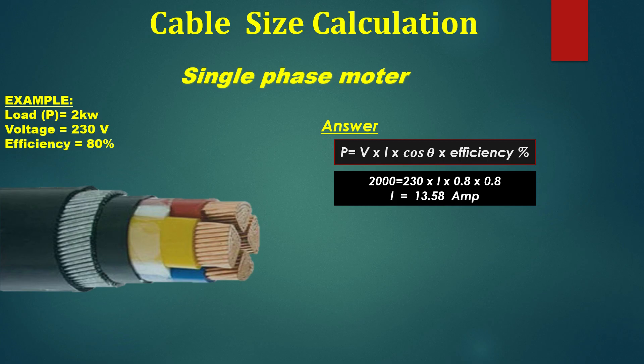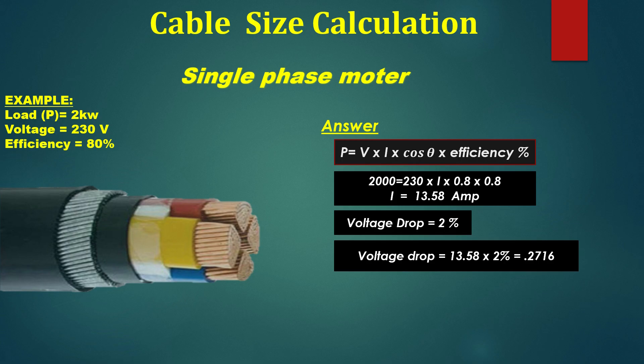Now, put the values in formula. 2000 is equal to 230 multiplied by current multiplied by 0.8 multiplied by 0.8. So, the current is 13.58 ampere. For every single phase motor have 2% voltage drop. So, voltage drop is equal to 13.58 multiplied by 2%. The answer becomes 0.2716.